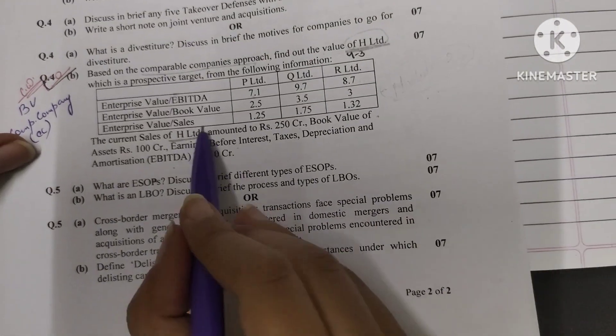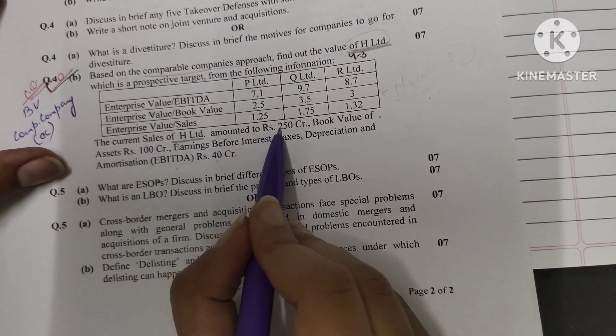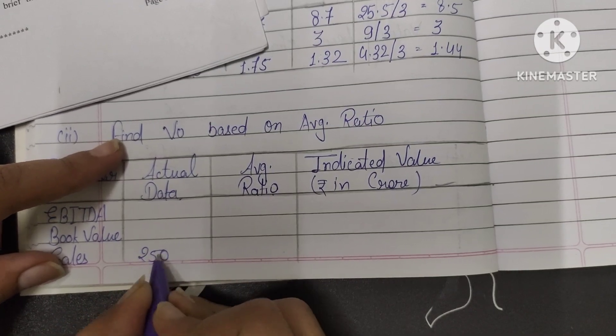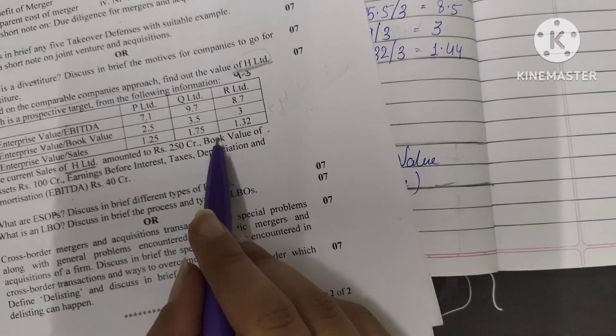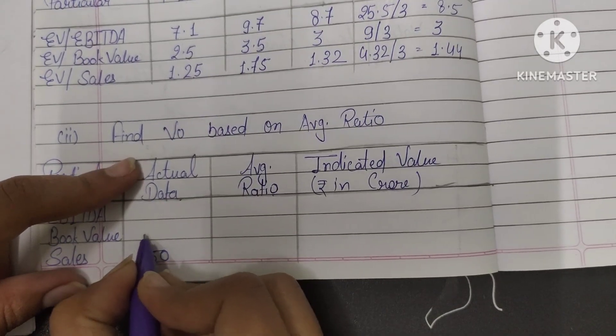So table is ready. Particular, actual data of H Limited, then average ratio, and indicated value. So actual data was given in the question. It is your actual data for H Limited. Sales is 250 crore, so here is sales, that is 250.